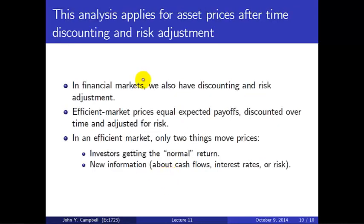Now, we've got to be a little careful in applying this to financial markets, because in financial markets, we also have discounting and risk adjustment. So the correct statement is that efficient market prices equal expected payoffs, discounted over time, and adjusted for risk. Then we would say that in an efficient market, only two things move prices.